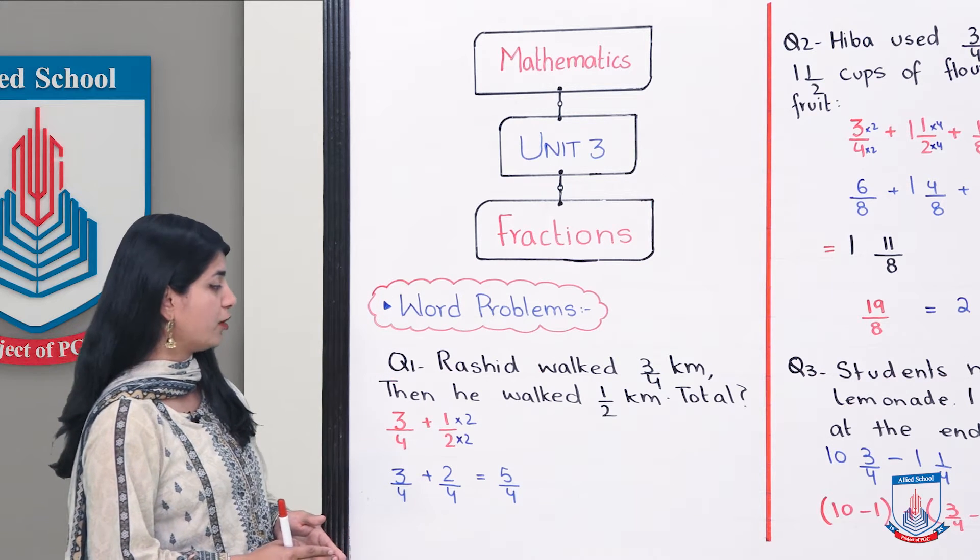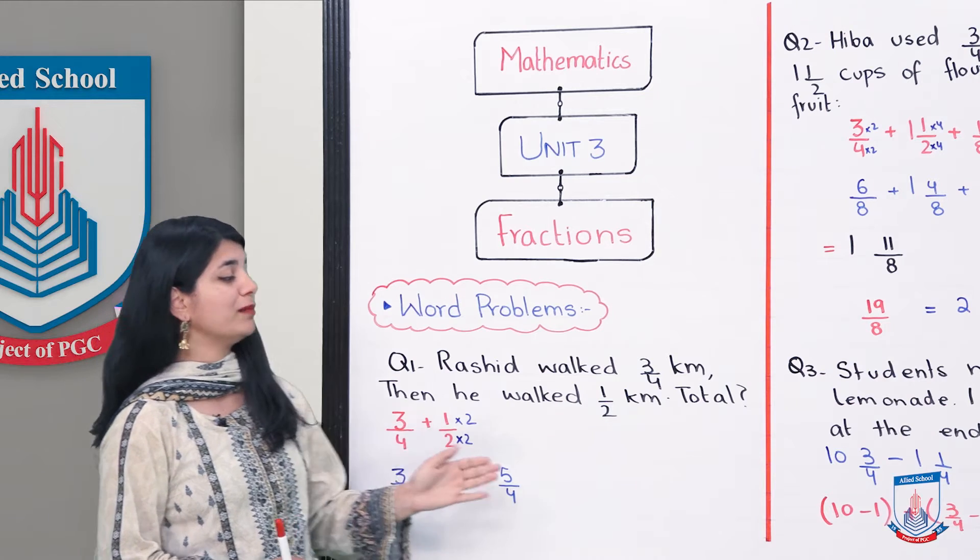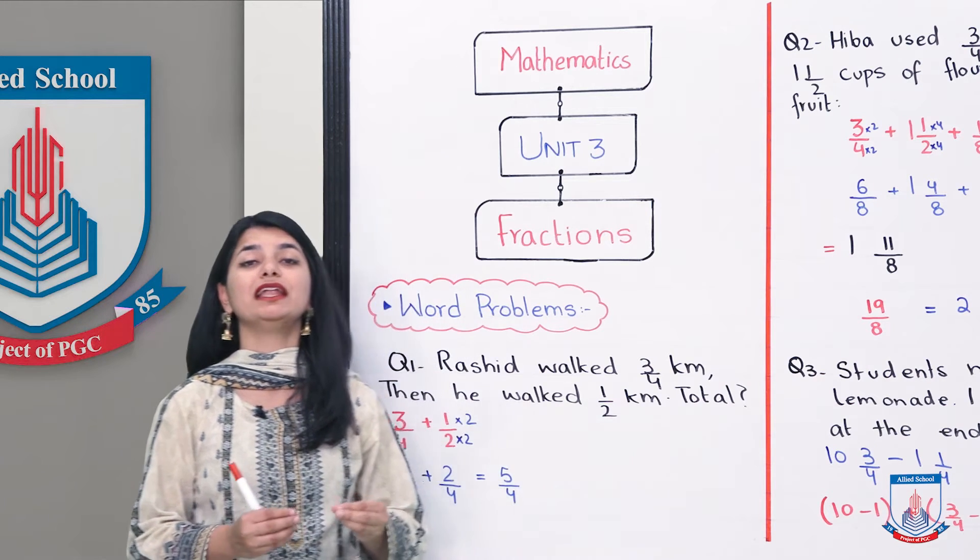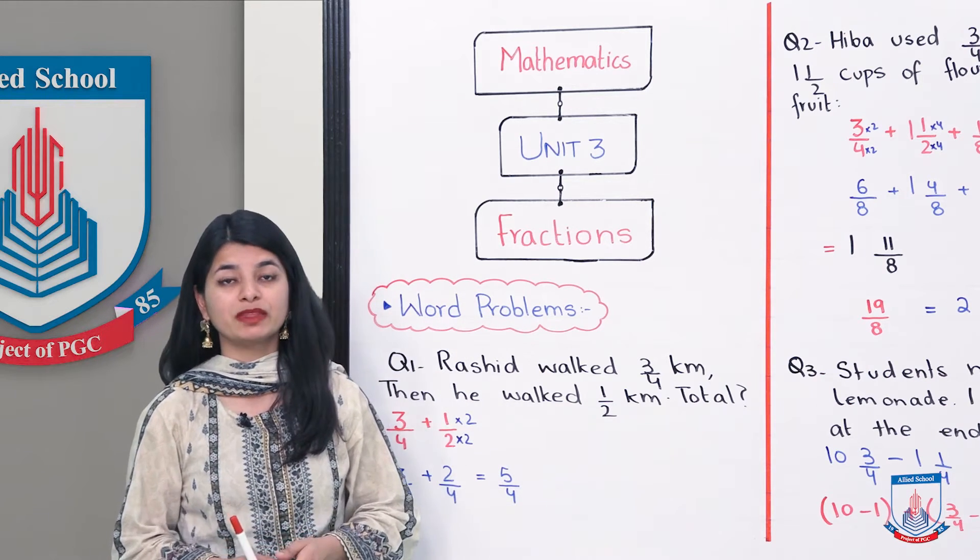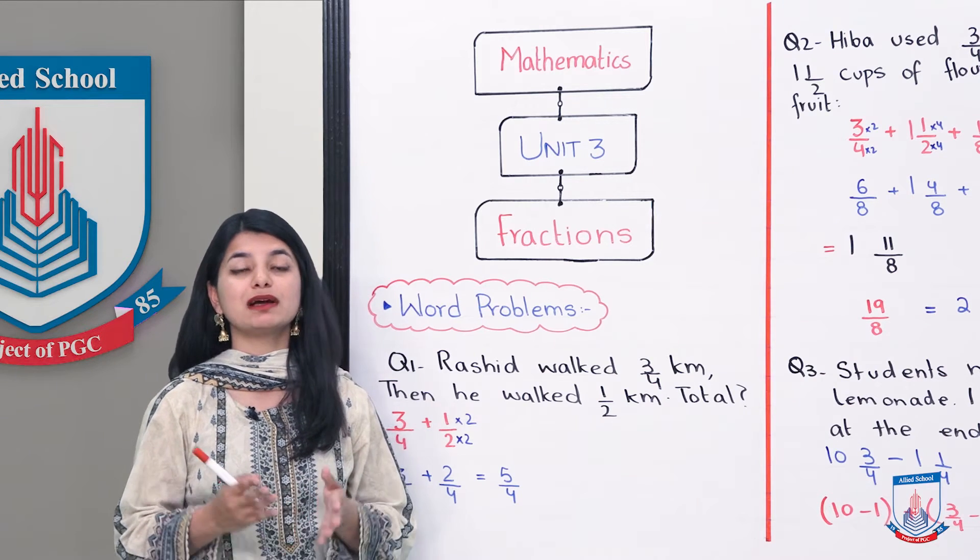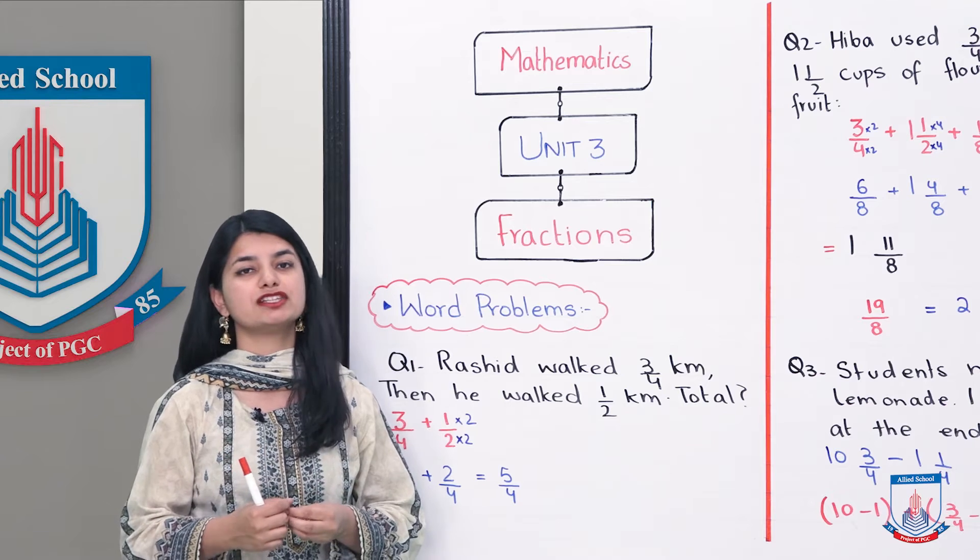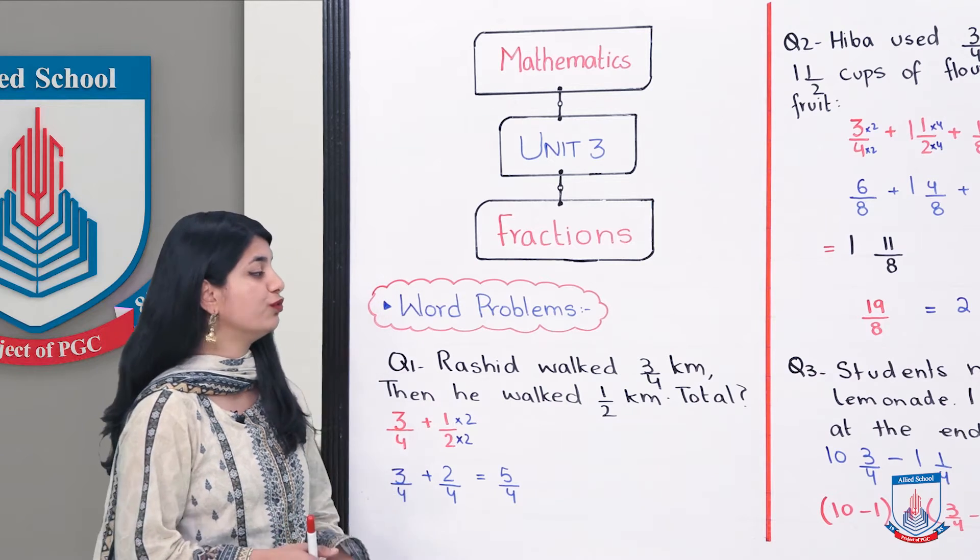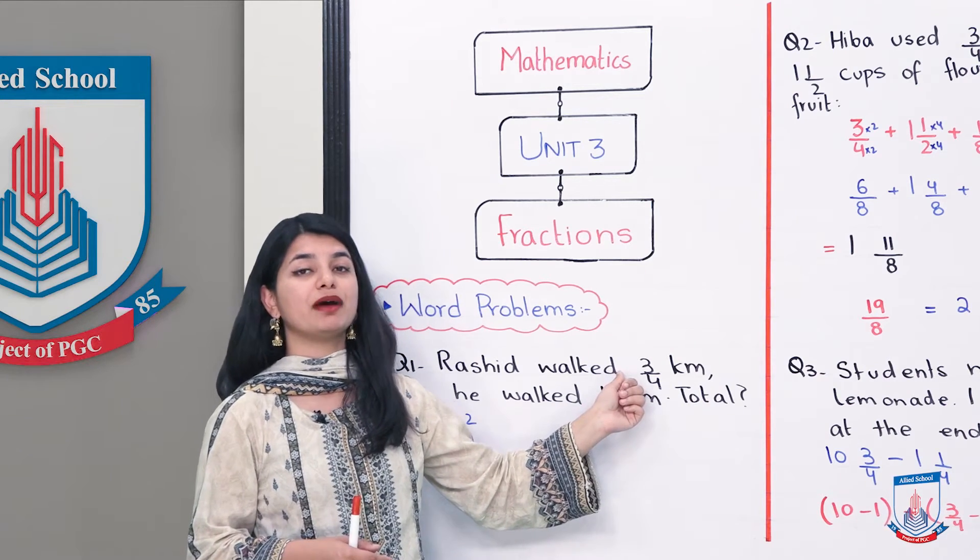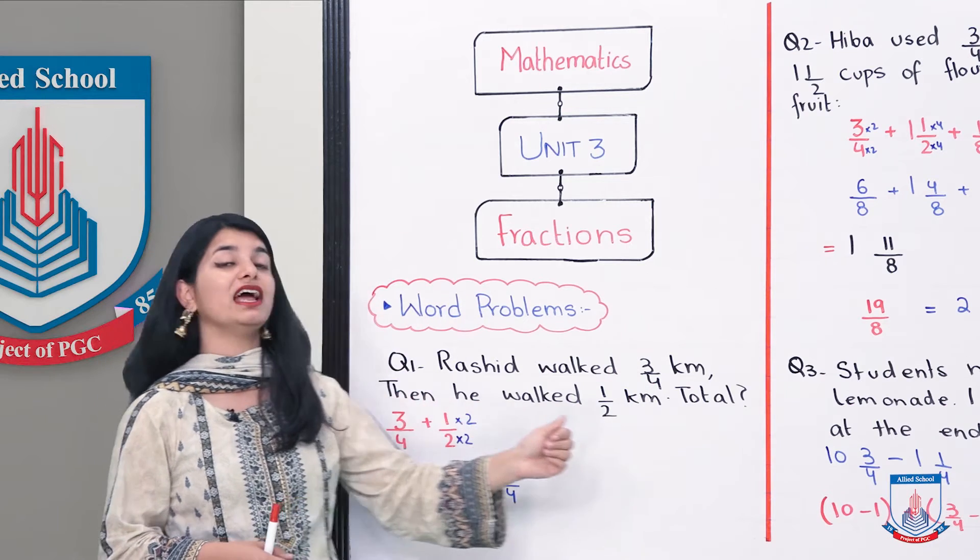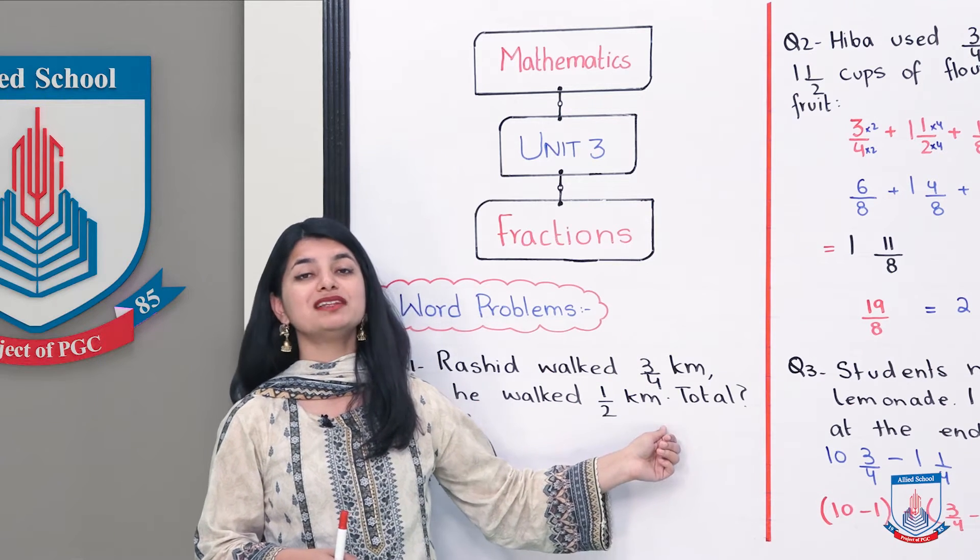Rashid walked 3 by 4 kilometers and then he walked 1 by 2 kilometers. How many kilometers did he walk in total? When you ask the total, it means that you add and get the answer. So here, you have two fractions. First, he walked 3 by 4 kilometers. Then, he walked 1 by 2 kilometers. So, you can simply add them.